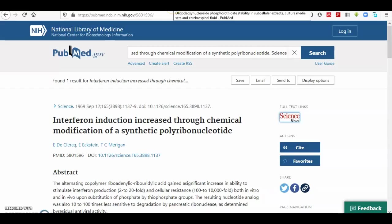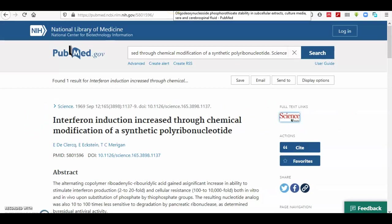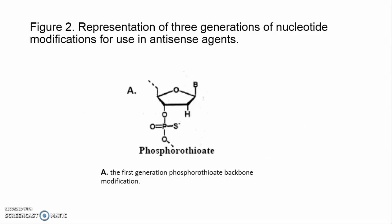In the late 1960s, Eckstein and colleagues successfully introduced what has been termed the first generation antisense-motivated nucleotide modification. They replaced one of the non-bridging oxygen atoms in the phosphate backbone with a sulfur atom (Figure 2a), called a phosphorothioate. This modification did achieve the goal of nuclease resistance.